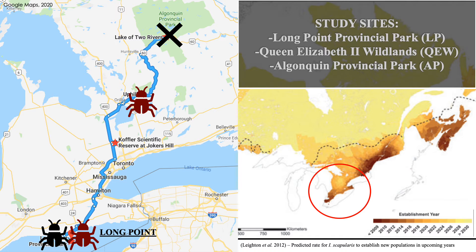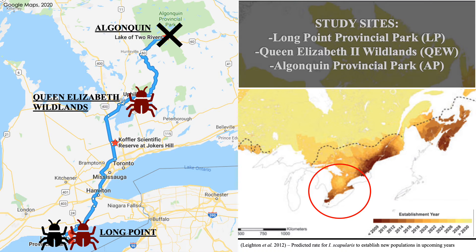I sampled three sites with varying tick establishment levels. The first site is Long Point, where deer ticks have been established since the 1970s and wood ticks since the 1950s. The second site is Queen Elizabeth Wildlands. Deer ticks have not yet established here, but there is a high density of wood ticks. The third site is Algonquin Park, where neither of these ticks are currently present, and the mice are considered ecologically naïve to these species.